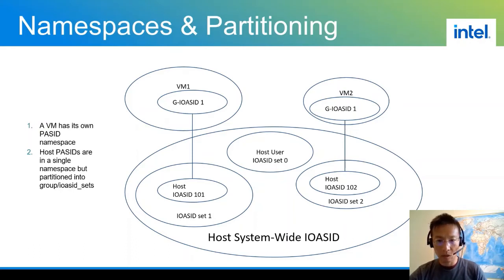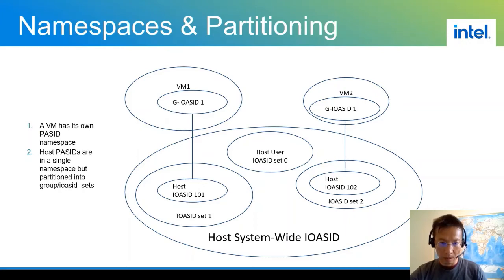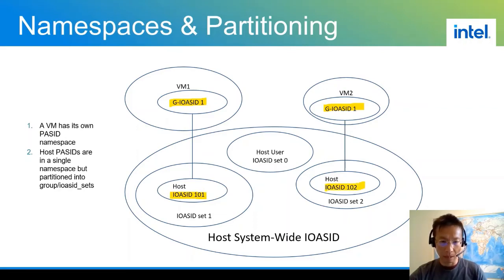Set 0 is used for host usage such as native SVM or native IOVA. IOACID sets 1 and 2 were given to the two VMs. In terms of namespaces, we do not support multiple namespaces — each native environment has only one single namespace for the IOACID. So in this example, VM1 could have IOACID number 1, VM2 can also have IOACID number 1, but the backing IOACID values are different — host values are 101 and 102 respectively. They must be unique to identify the DMA streams that match different page tables.